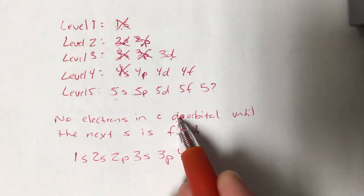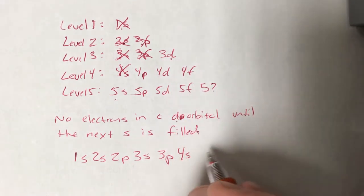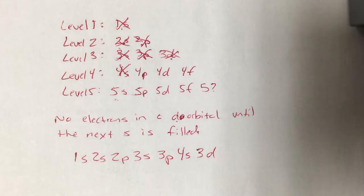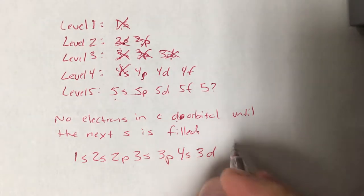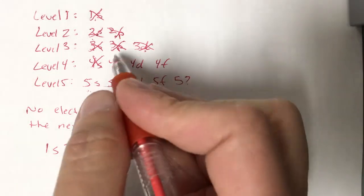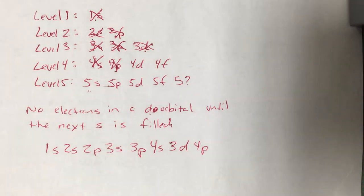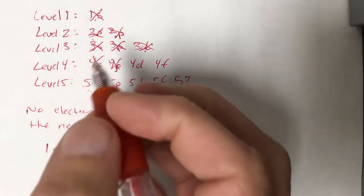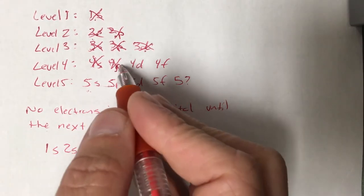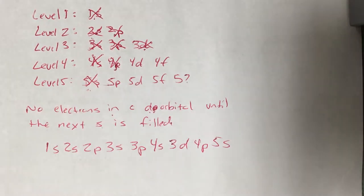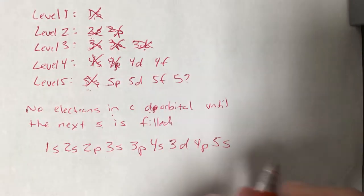Once that 4s is filled, we can come back down to 3d and get that one. That one's full. Now we move on to the next available one, which is 4p. And then we hit a d again. And again, the rule is no electrons in a d orbital until the next s orbital is filled. So instead of going from here to here, we go down to the 5s. That one's filled, now we can go back to 4d.